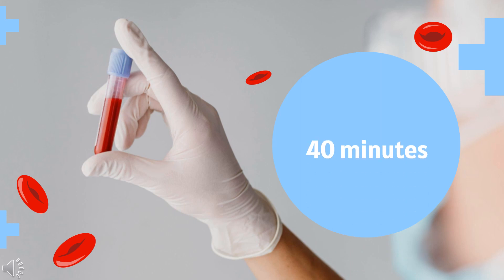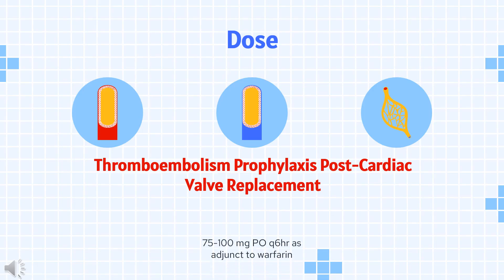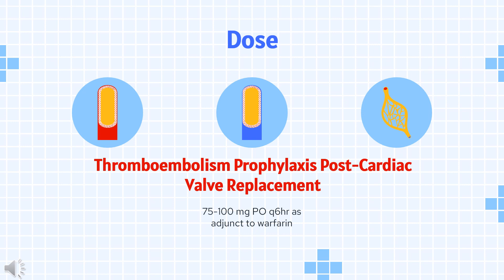Half-life: 40 minutes. Dose — Thromboembolism prophylaxis post-cardiac valve replacement: 75 to 100 mg PO every 6 hours as adjunct to warfarin.